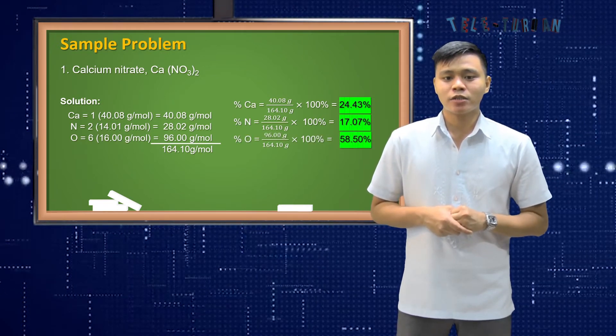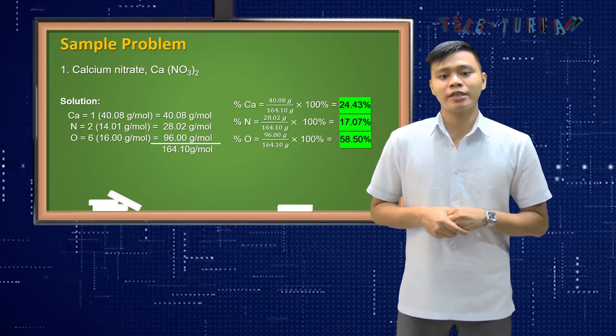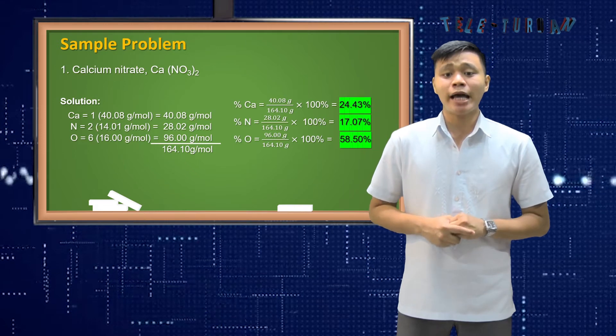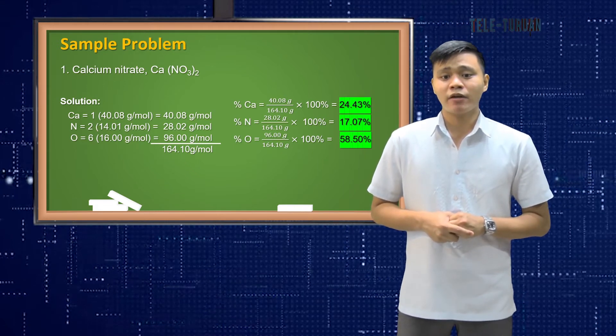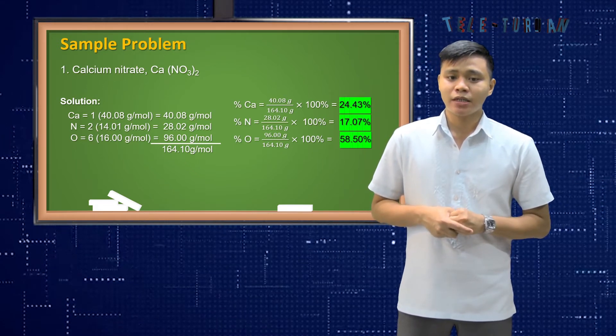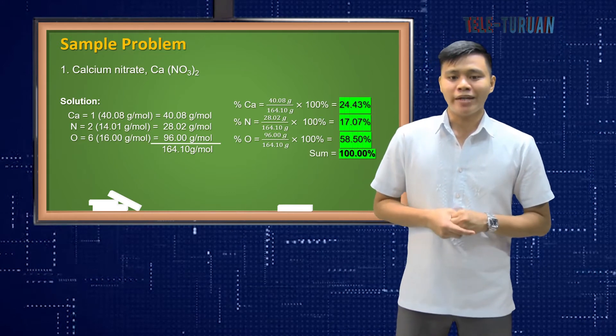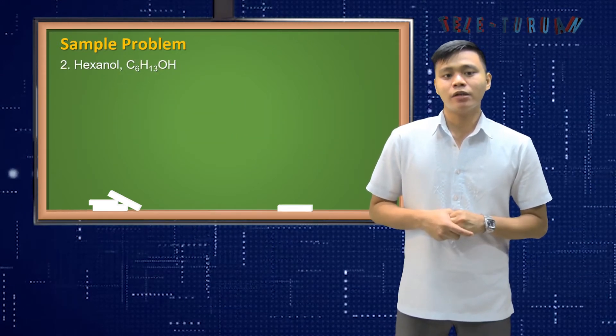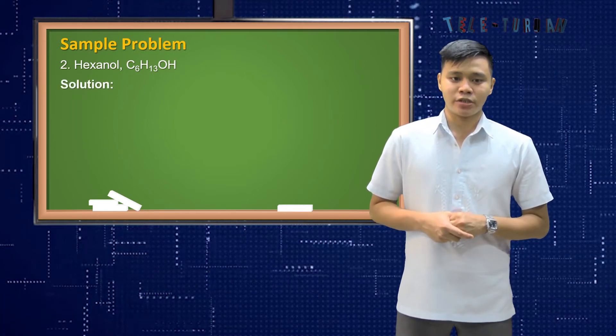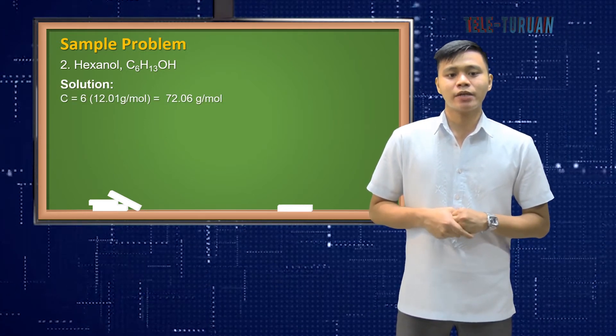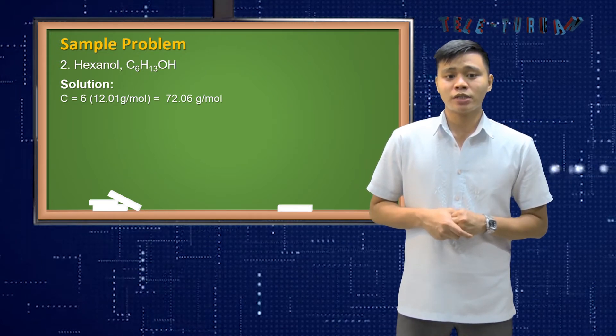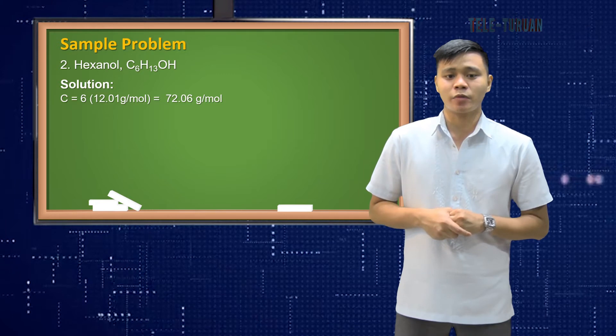The answer is 17.07% and for our percent oxygen, it is equal to 96.00 grams divided by 164.10 grams times 100%. The answer is 58.50% so the sum is equal to 100%. For number 2, hexanol or C6H13OH. The solution is C is equal to 6 times 12.01 grams per mole is equal to 72.06 grams per mole.